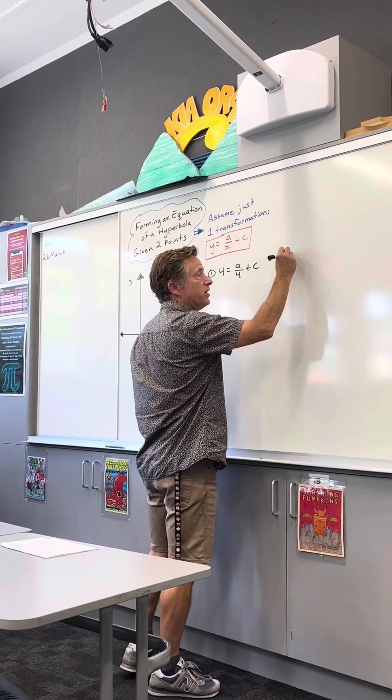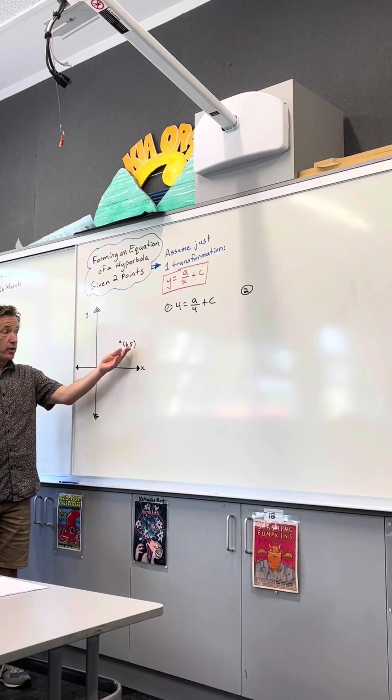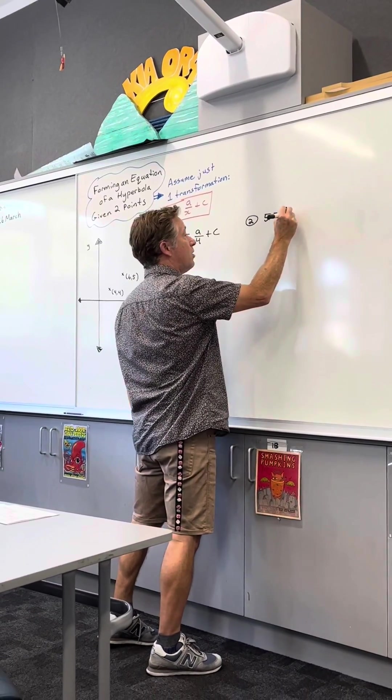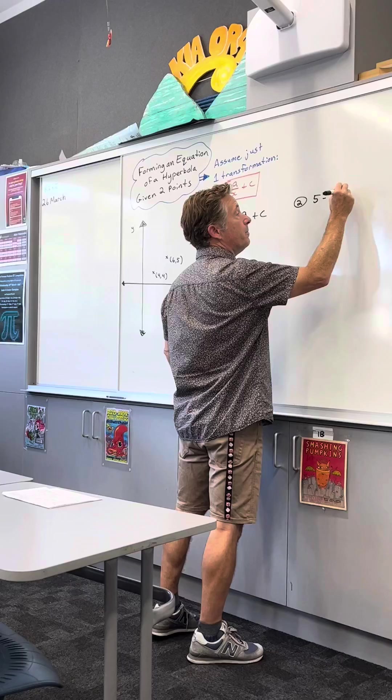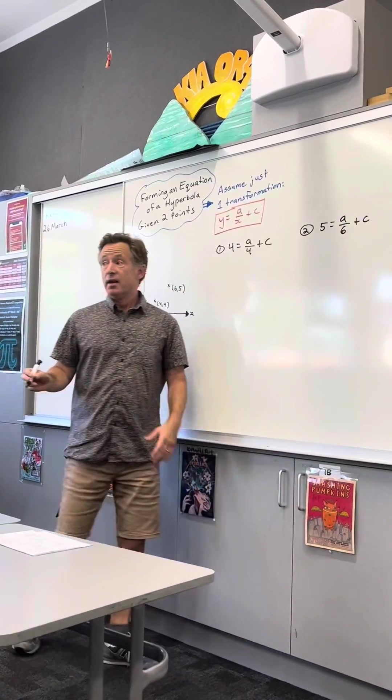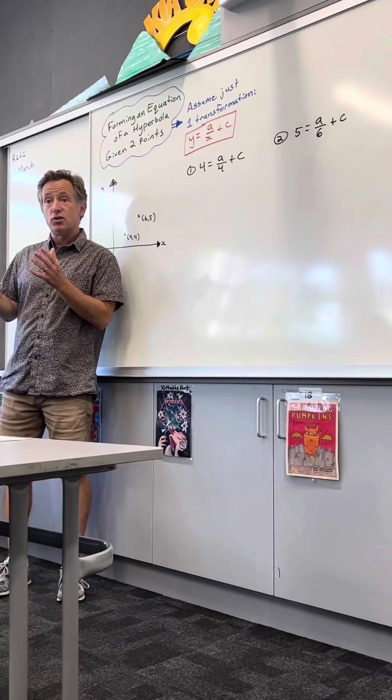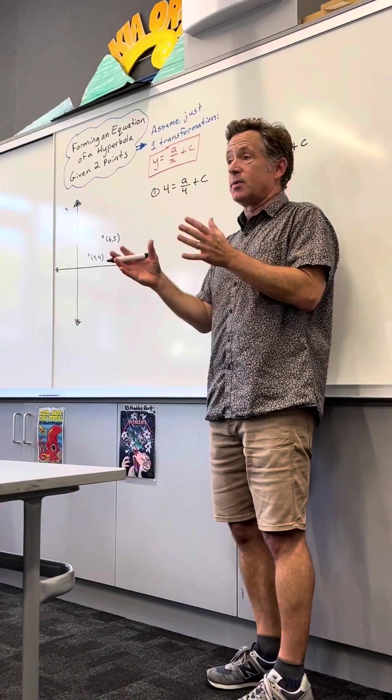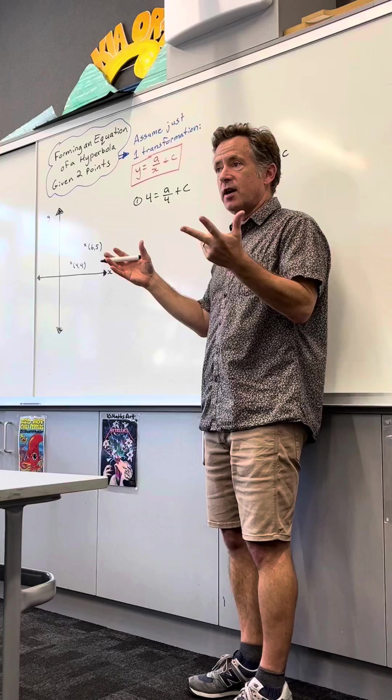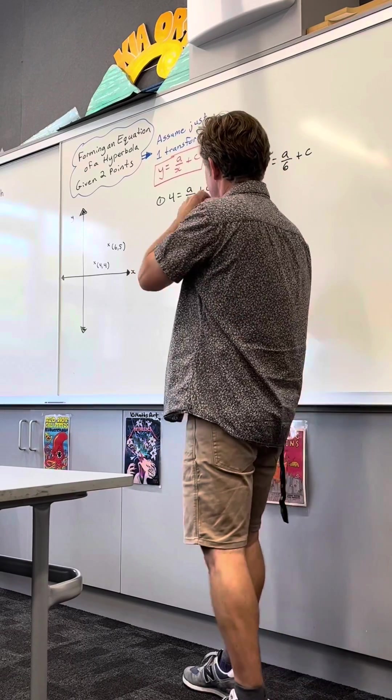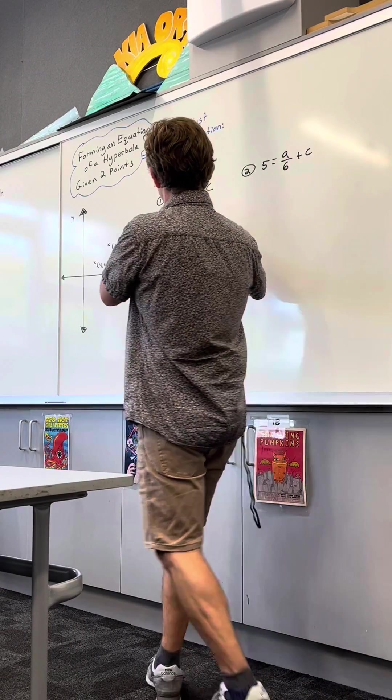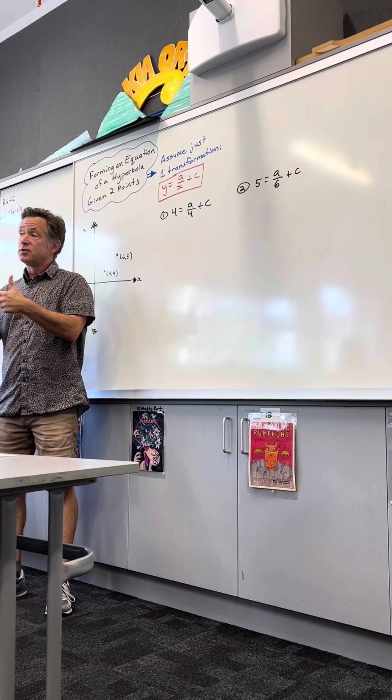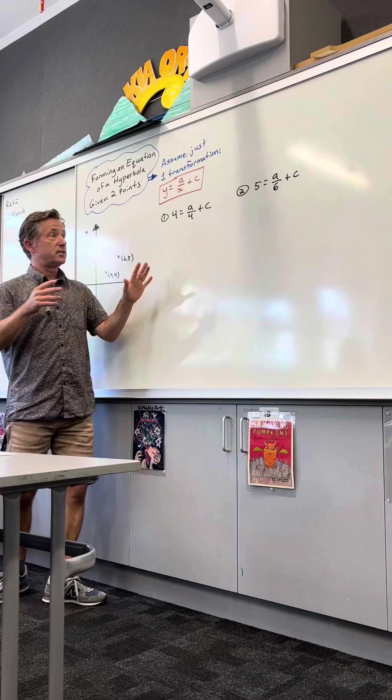Okay, my second equation is using this coordinate, and I get 5 equals a over 6 plus c. Now right now I've got simultaneous equations. I've got two equations with two different variables, and algebra can handle that perfectly. Algebra can handle two equations, two variables. So how I solve this is I'm going to get a by itself for both of these, and then I'm going to set them equal to each other to solve.